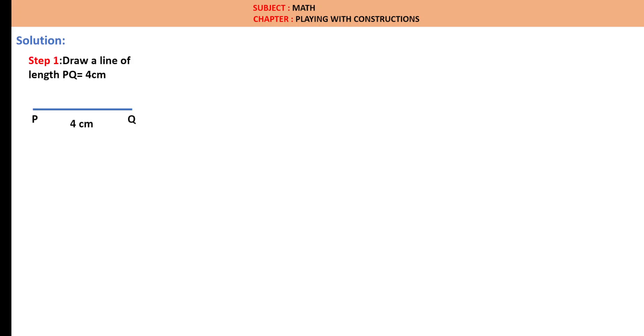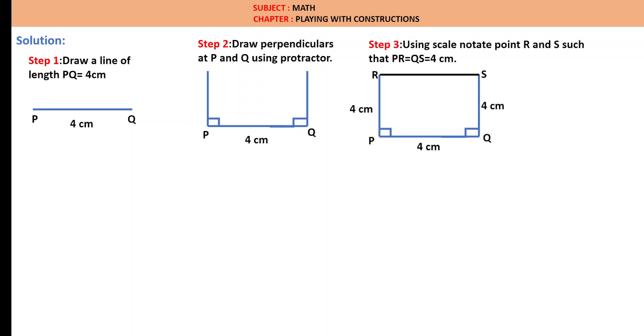Solution. Step 1: Draw a line of length PQ equal to 4 cm. Step 2: Draw perpendiculars at P and Q using protractor. These are the perpendiculars. Step 3: Using a scale, notate point R and S such that PR equal to QS is equal to 4 cm. You are notating R and S. This PR length is 4 cm. Similarly, QS length which is like a perpendicular here is 4 cm. For reference, join RS.